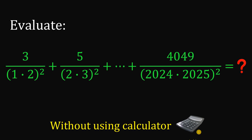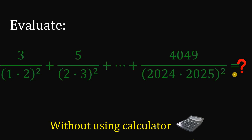Can you solve this math challenge? Here's the question: without using any calculators, evaluate 3 over (1 times 2) raised to the power of 2, plus 5 over (2 times 3) raised to the power of 2, plus all the way down to 4049 over (2024 times 2025) raised to the power of 2.